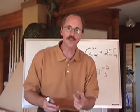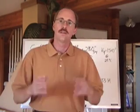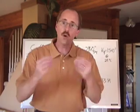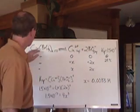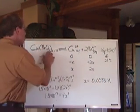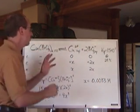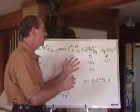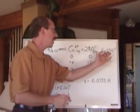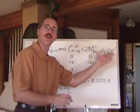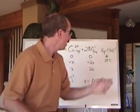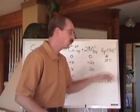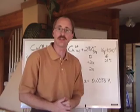Here's an example. We have a compound — copper 2 bromate — and we're going to take that copper 2 bromate with its Ksp of 1.5 times 10 to the negative 7, at 25 degrees Celsius.